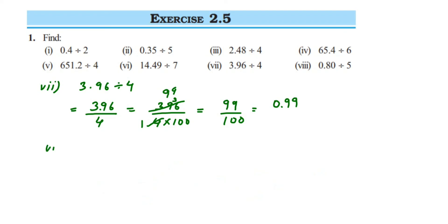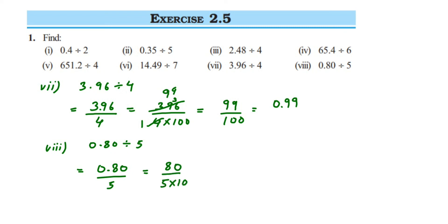Eighth question: 0.80 divided by 5. Remove the decimal — two digits — giving 80 upon 5 multiplied by 100. Cancel in 5 table: 5 ones are 5, remainder 3 makes 30; 5 sixes are 30. That gives 16 upon 100. Two zeros in the denominator, so 0.16 is the answer.